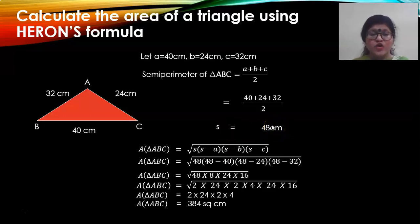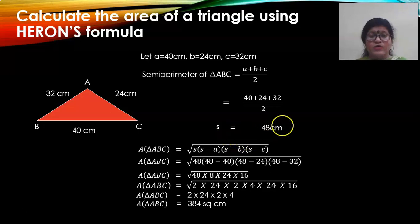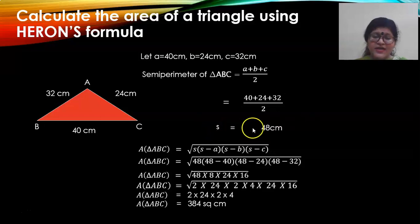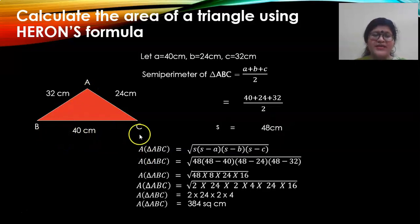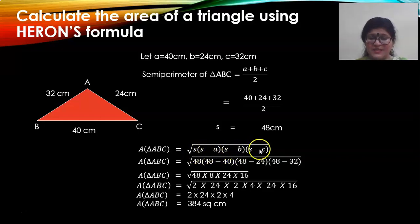Students, make a note of this. Semi-perimeter is 48 cm. In calculating the area by using Heron's formula, you need to find out the semi-perimeter of the triangle first. After having found the semi-perimeter, use the formula. Area of triangle ABC — this is Heron's formula: square root of S(S minus A)(S minus B)(S minus C), where S stands for semi-perimeter and you subtract the three sides from the semi-perimeter.